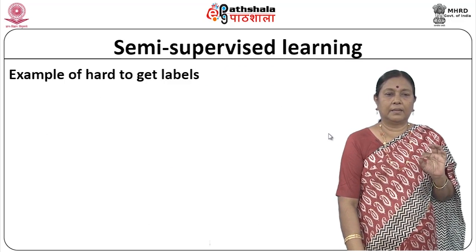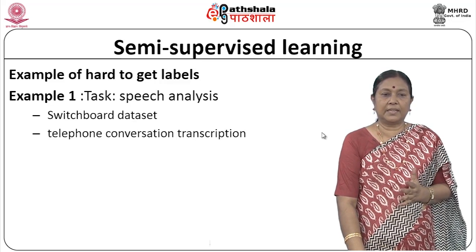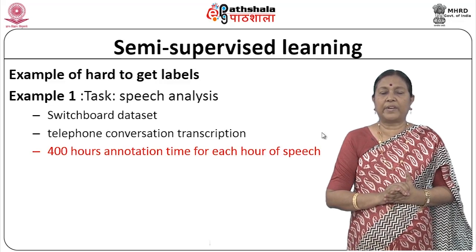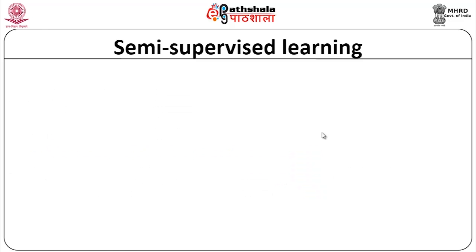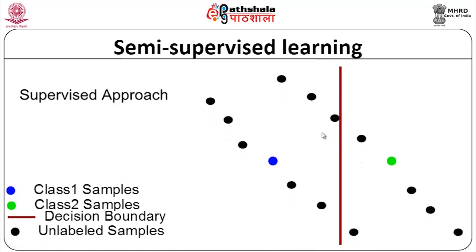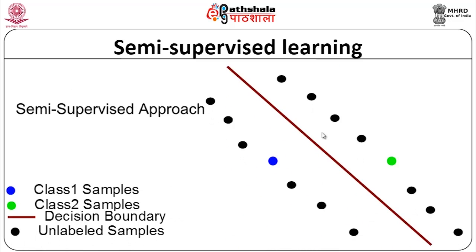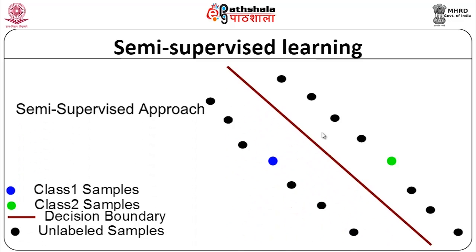Semi-supervised learning is widely used where labels are hard to get. For example, in speech analysis using the switchboard dataset of telephone conversation transcriptions, it takes 400 hours of annotation time for each hour of speech — making annotation very hard. Another example is face recognition in images: it is hard to get lots of labeled face images, but easy to get unlabeled ones. In such cases, adding unlabeled samples changes the decision boundary, yielding a better semi-supervised approach.